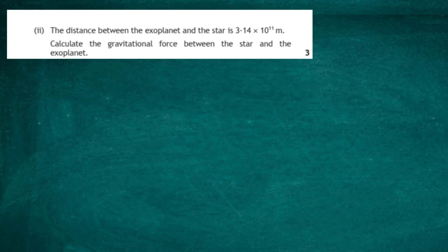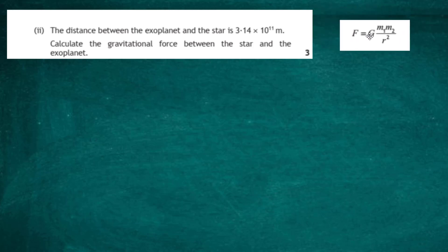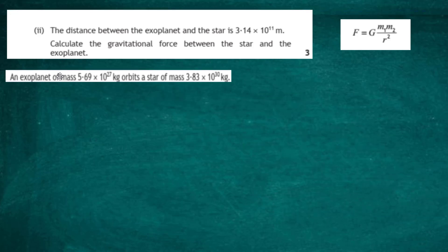Part a(ii): the distance between the exoplanet and the star is 3.14 times 10 to the power 11 meters, and we have to calculate the gravitational force between the star and the exoplanet. From the equation sheet, the gravitational force between two bodies of mass m1 and m2 is given by F equals G times m1 times m2 divided by r squared.